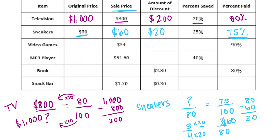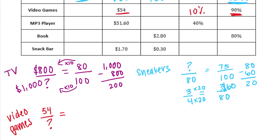For video games: we don't know the original price but we know the sale price is $54. The percent paid was 90%, which means the percent saved is 10% — those two add up to 100%. We need the amount of discount and the original price. Since we know the sale price equals 90 out of 100...